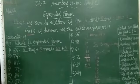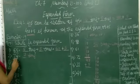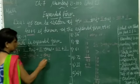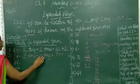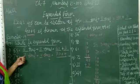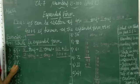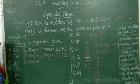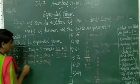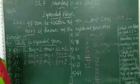So 74 equals 7 10s plus 4 1s, which is 70 plus 4. Same for 87 — in 87, how many 10s? 8 10s. And how many 1s? 7 1s. So 8 10s equals 80, plus 7 1s — so 80 plus 7 is equal to 87.